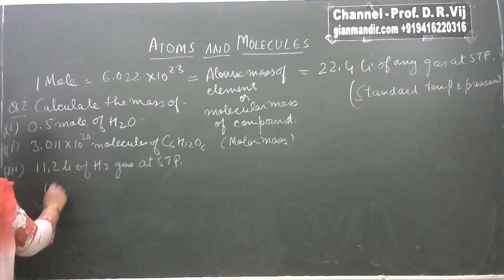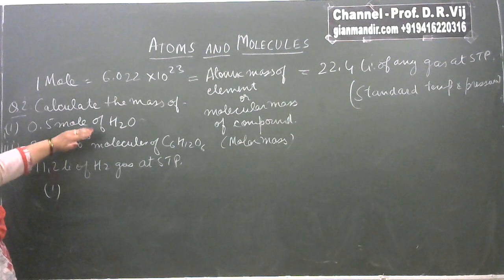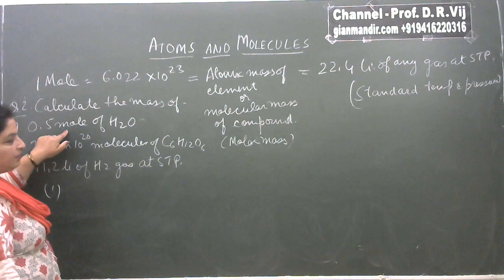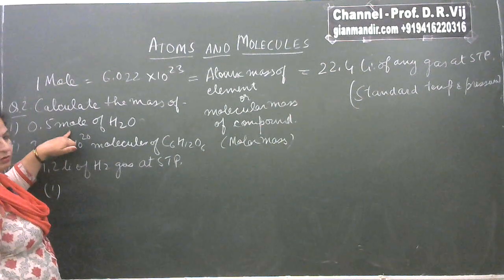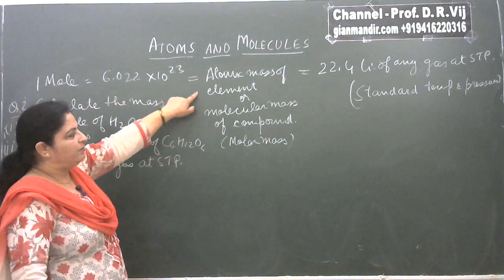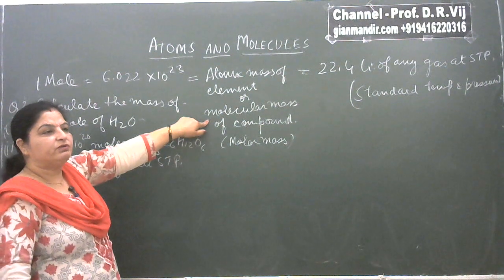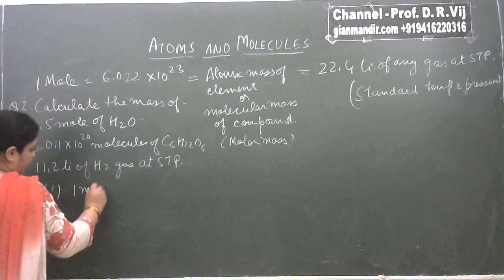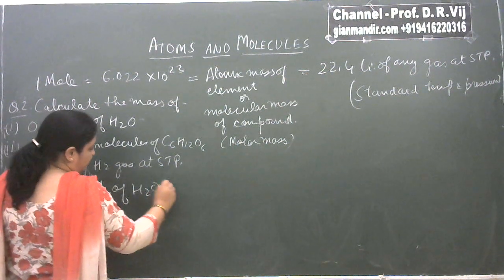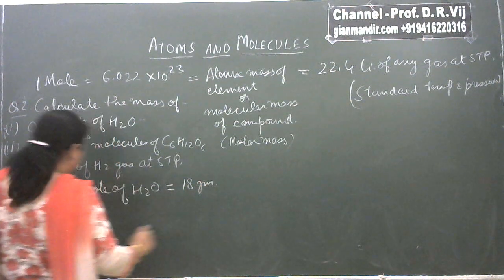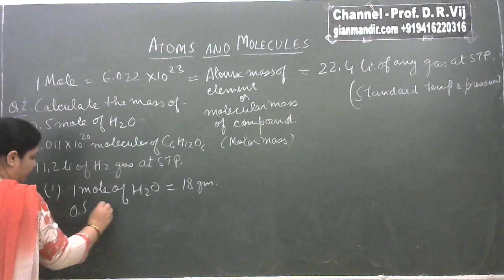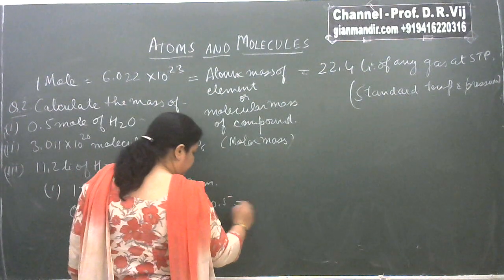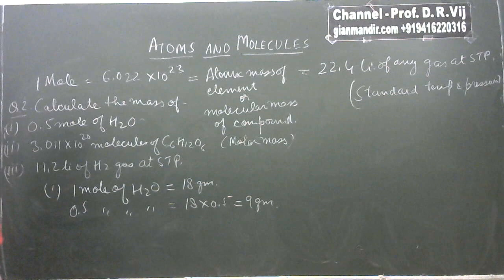First, calculate the mass of 0.5 mole of water. The relationship needed is between mass and number of moles: 1 mole equals molecular mass. As water is a compound, we use its molecular mass. 1 mole of water has a mass of 18 gram, so 0.5 mole of water will have a mass of 18 × 0.5, which comes out to be 9 gram.